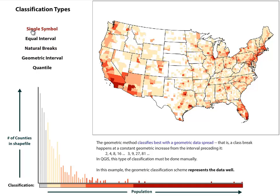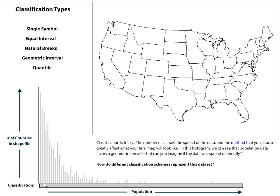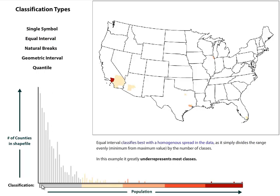The first one to come in is usually single symbol, which is just one color for everything in your entire data set — not really that useful. So if you want to do any kind of graduated scheme, you have other methods. I'm going to start with equal interval because that seems like it makes the most sense. This would be making classes based on, let's say, zero to a thousand people per square mile, a thousand to two thousand, two thousand to three thousand, and so on — increasing your class breaks at regular intervals.